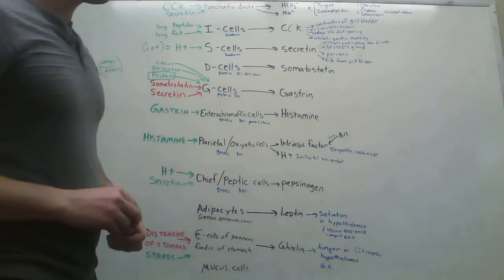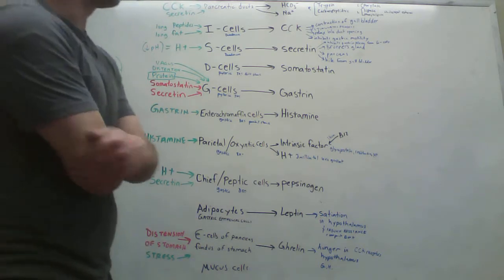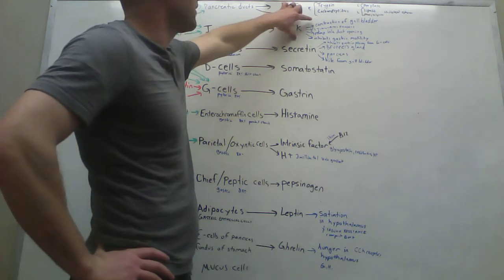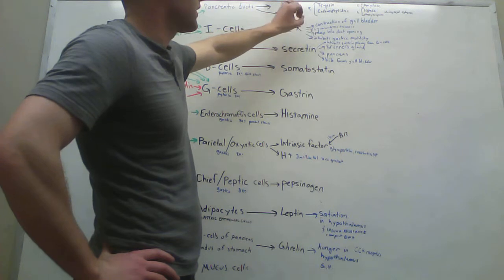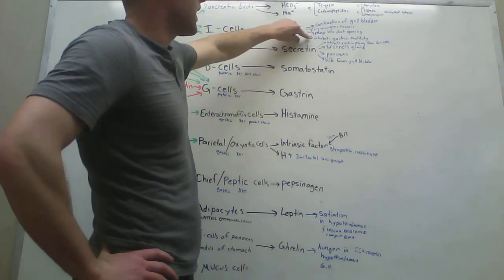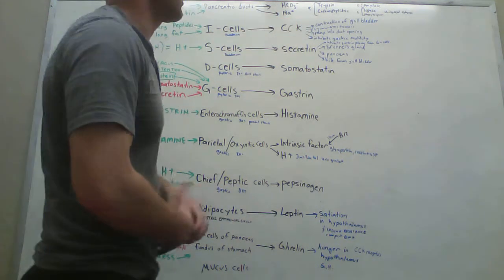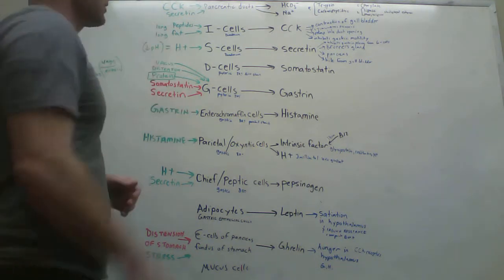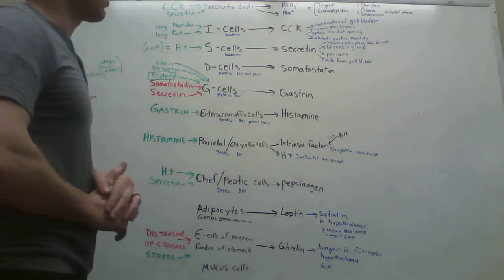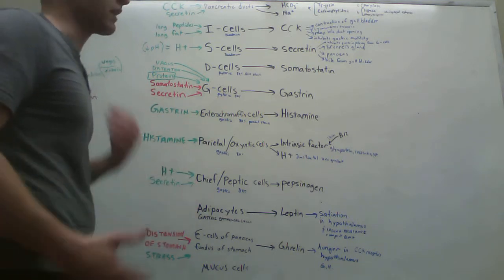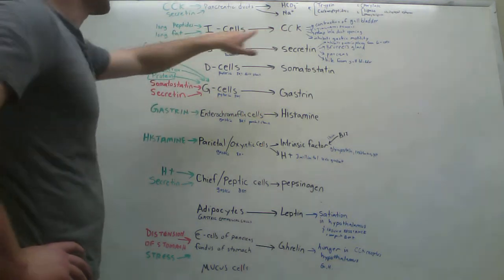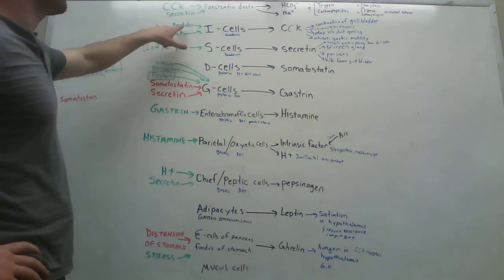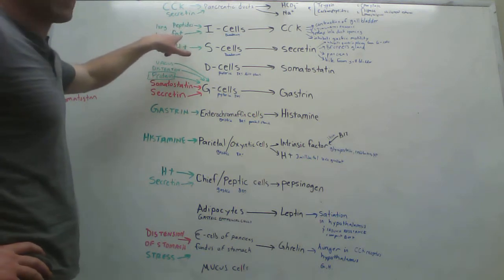And cholecystokinin does four things. It causes the contraction of the gallbladder, stimulates the pancreas, relaxes the bile duct so that it opens, and it inhibits gastric motility. So I believe that it also actually causes you to feel satiated as well, like satisfied, like full.